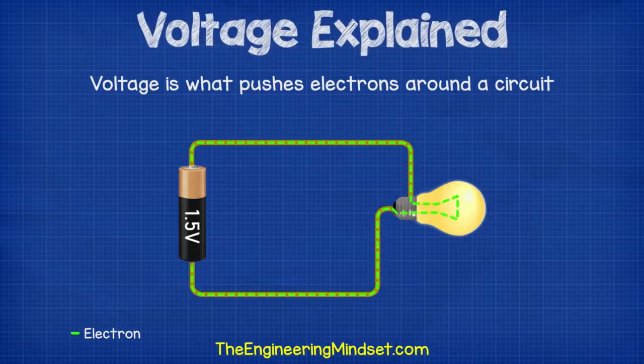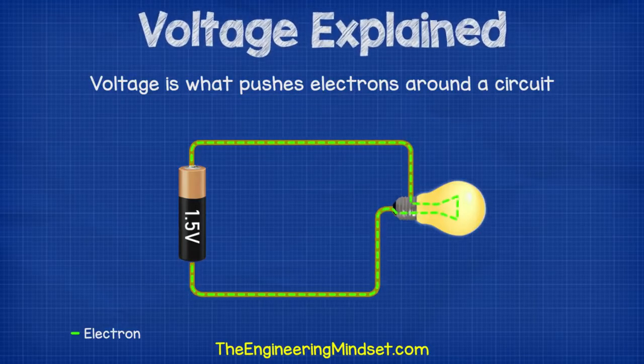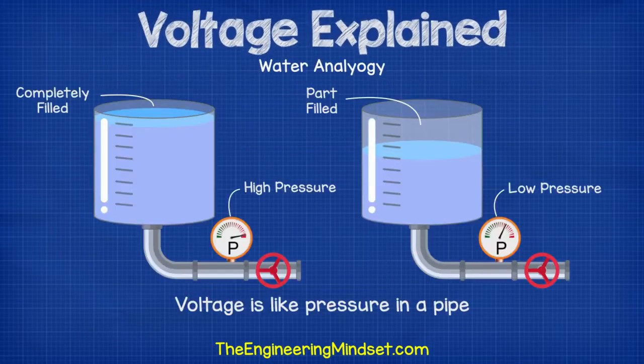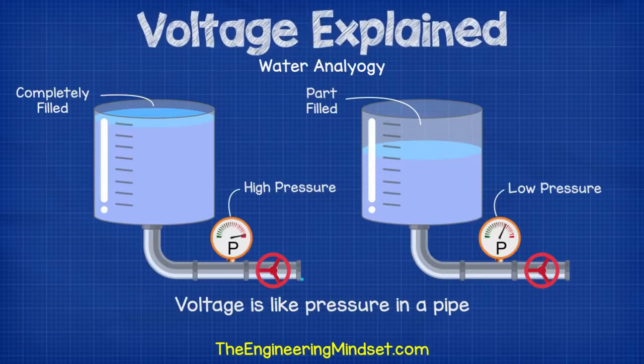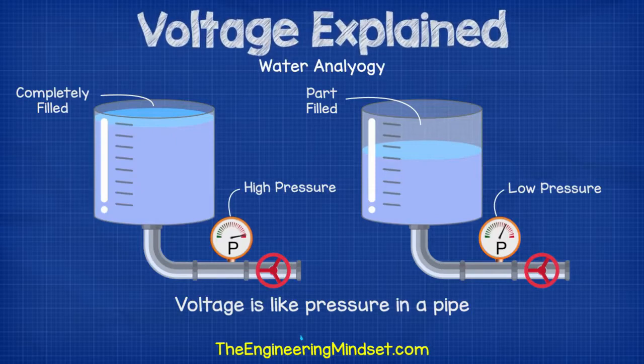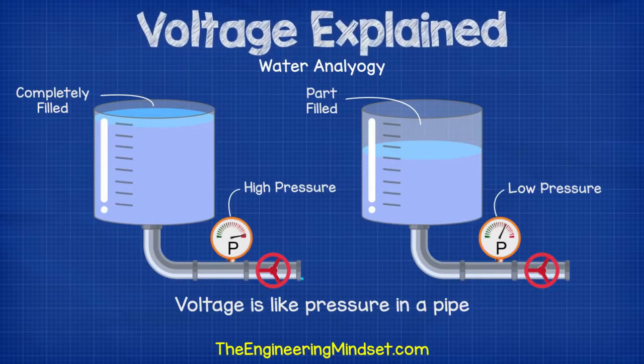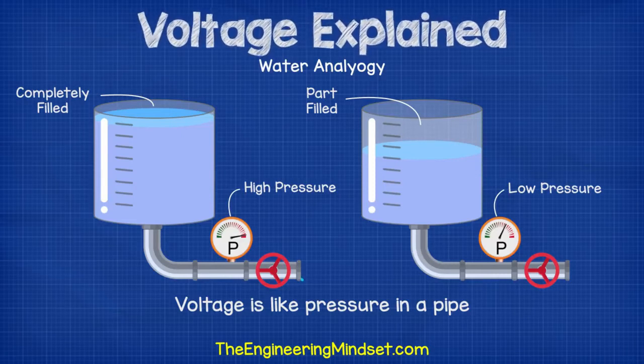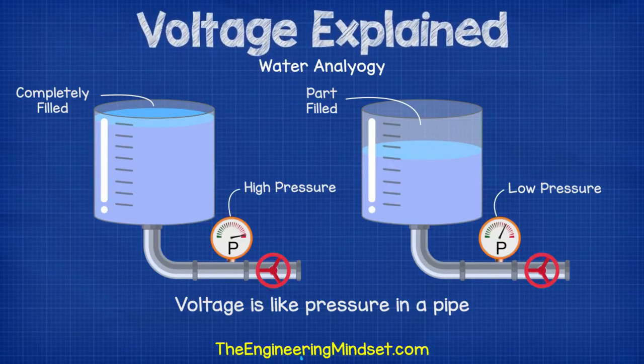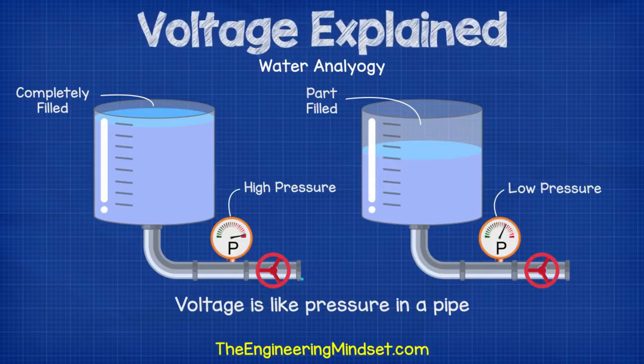The voltage moves the electrons in the same direction, causing the current. It is easy to imagine voltage like a pressure in a water pipe. If we have a water tank completely filled with water, then the mass of all this water is going to cause a huge amount of pressure at the end of the pipe.